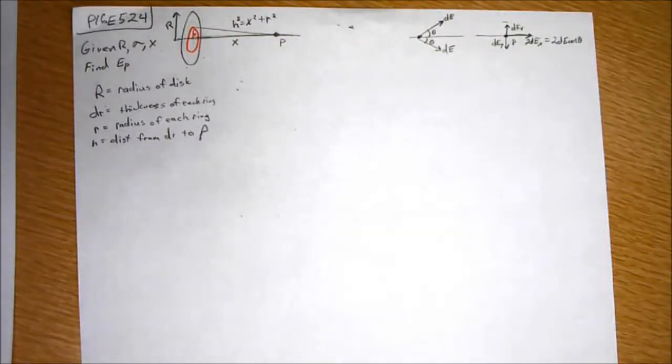In this problem you're told a disc of radius R has a uniform surface charge density sigma that's given to us. Calculate the electric field at point P that lies along the central perpendicular axis of the disc at a distance X from the center of the disc.